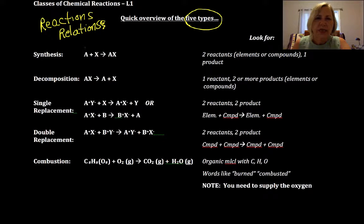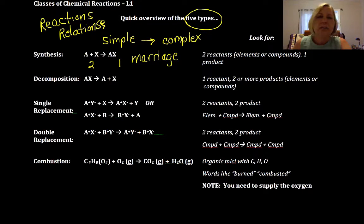So the first one would be a synthesis. The key to a synthesis is you're going from two simple substances to a more complex one. So you're looking for two reactants going to one product, much like a marriage: the two shall become one.